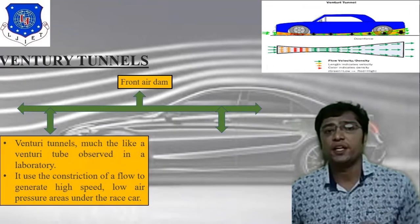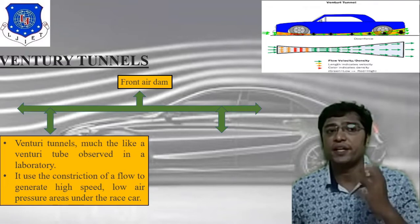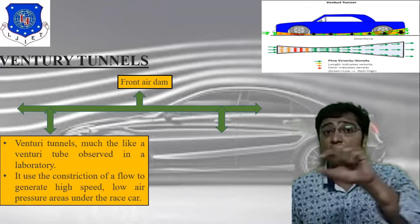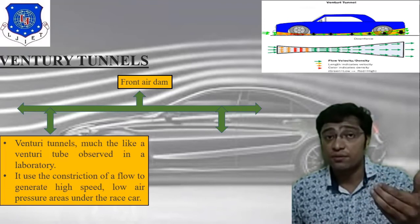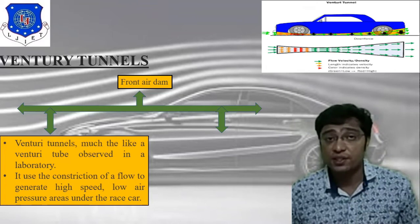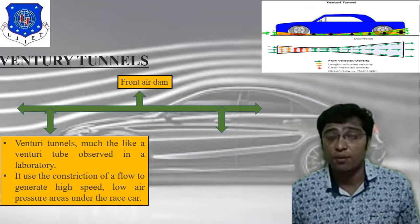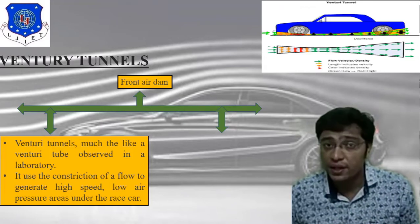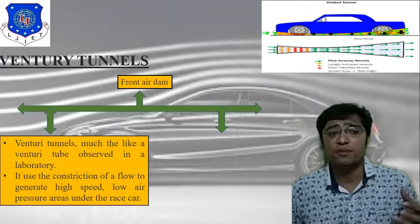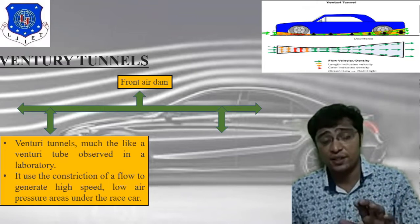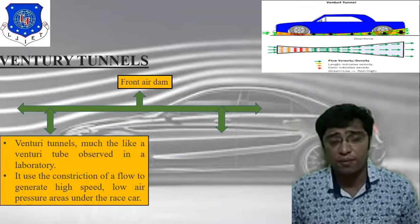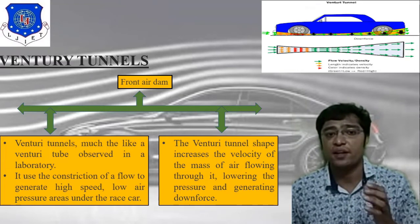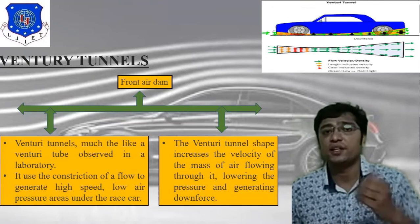The third device is the Venturi tunnel. From the image you can directly understand the Venturi tunnel — its shape increases downforce and decreases air resistance, improving vehicle performance. The Venturi tunnel works like the Venturi tool observed in the figure, using constriction of the flow to generate high speed and reduce air resistance.